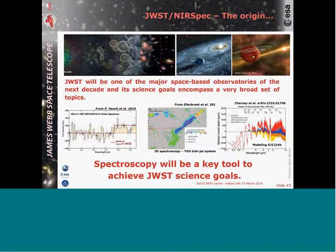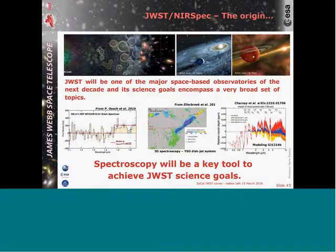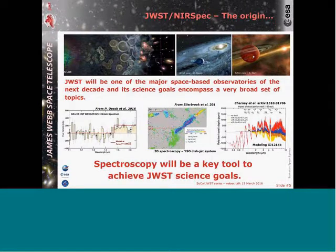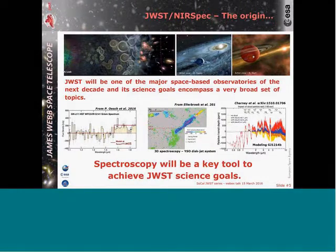Another topic that basically appeared between the time JWST was imagined and the time it became a reality is exoplanets. A few examples: a very recent one is the z=11 galaxy detected recently, another is 3D spectroscopy of a young stellar object, and then some modeling for the near-infrared and mid-infrared spectrum of an exoplanet. The message from all these science cases is that spectroscopy will be a key tool to achieve these goals and for astronomers using JWST.